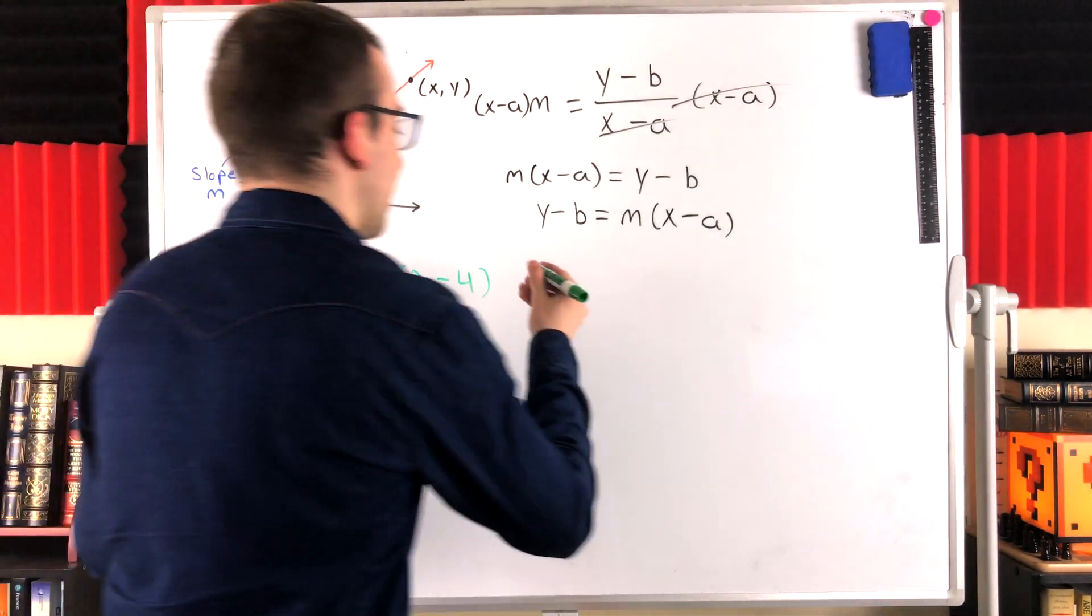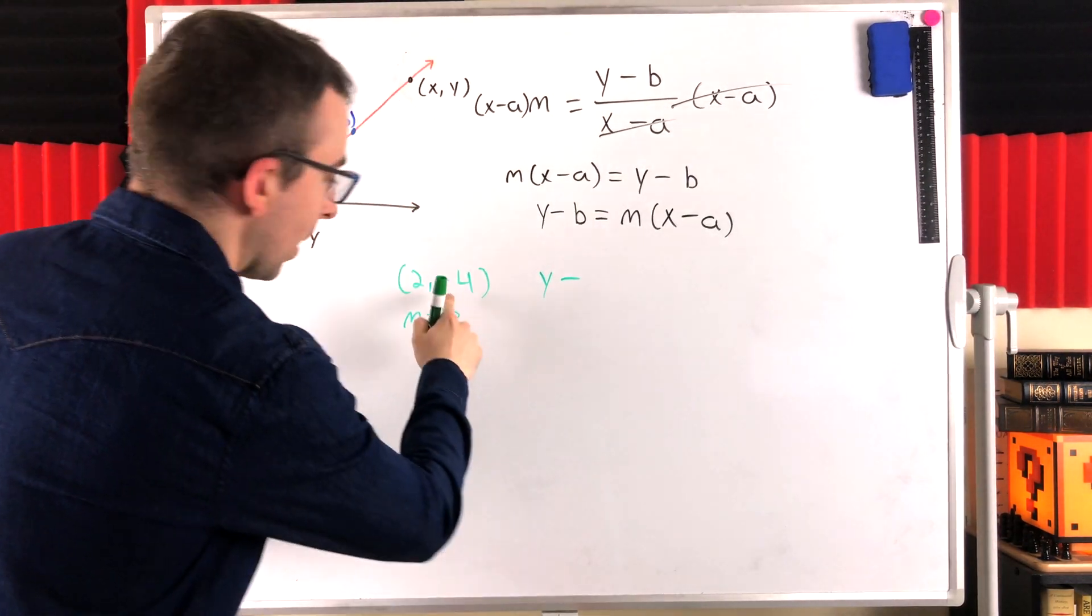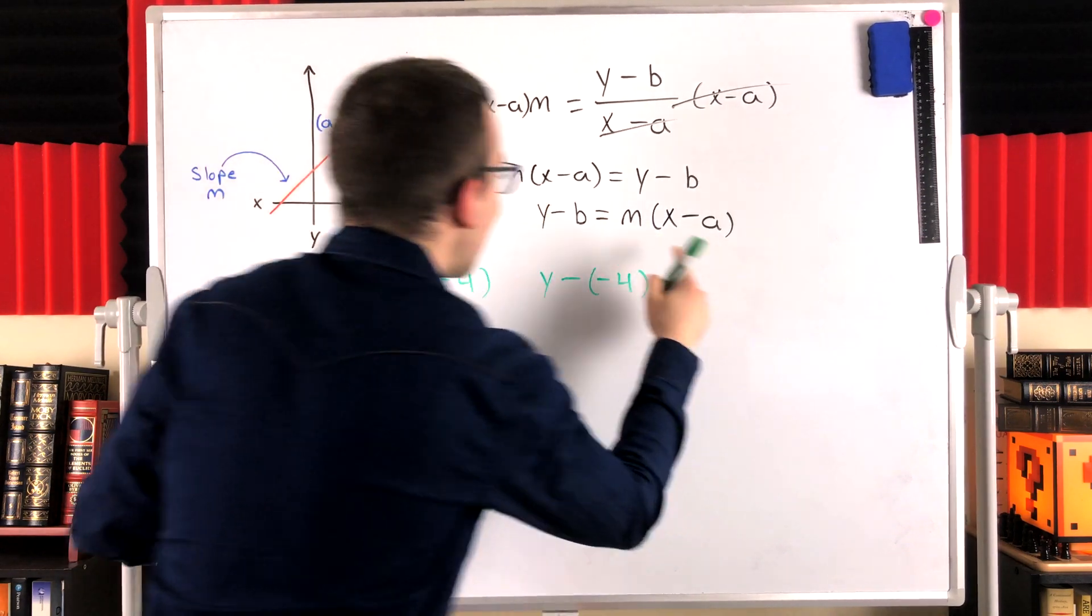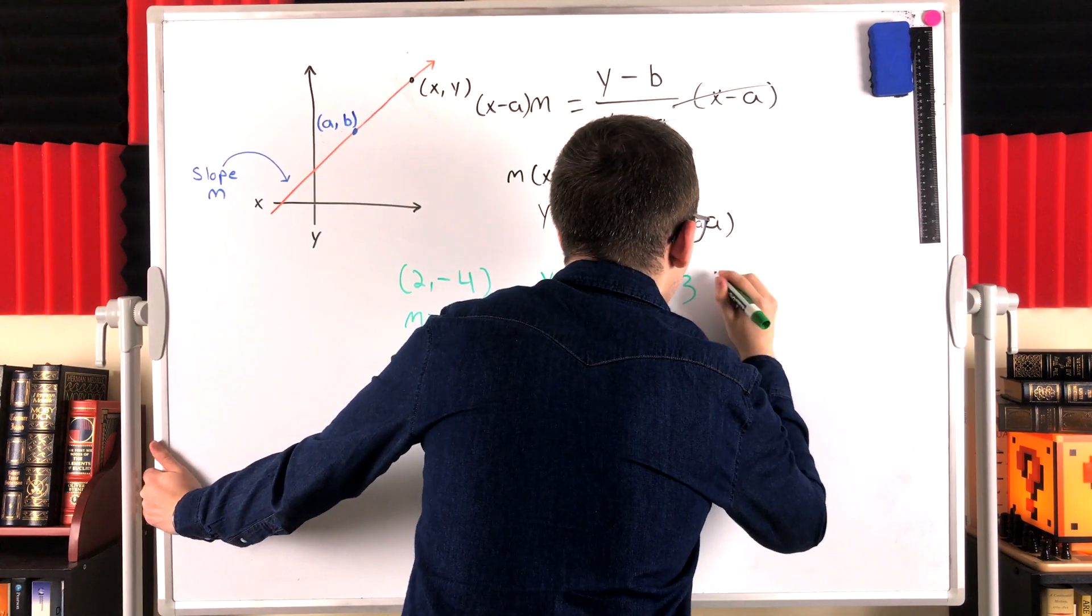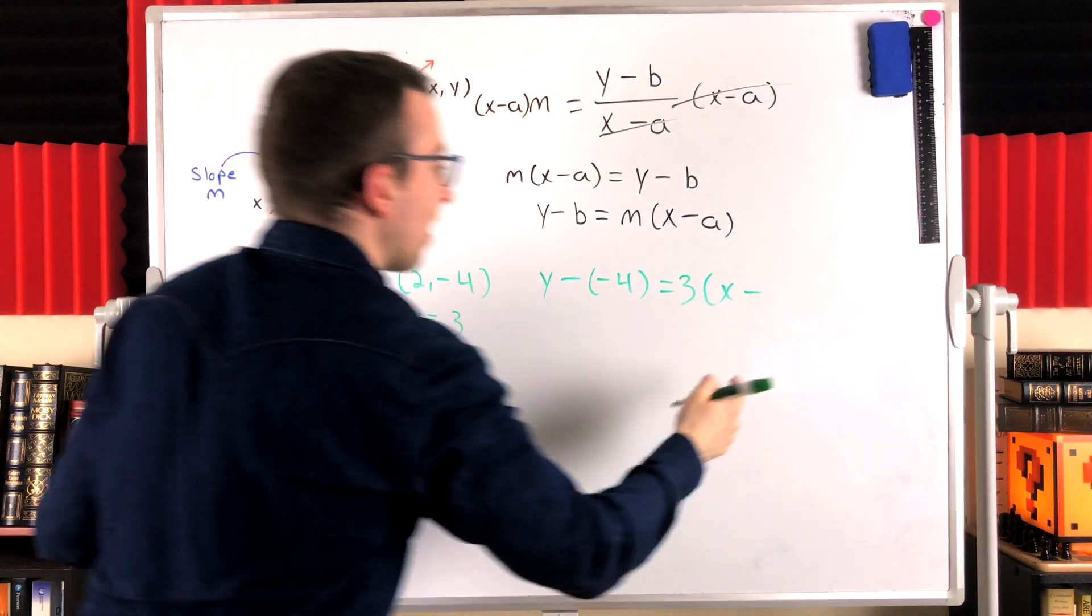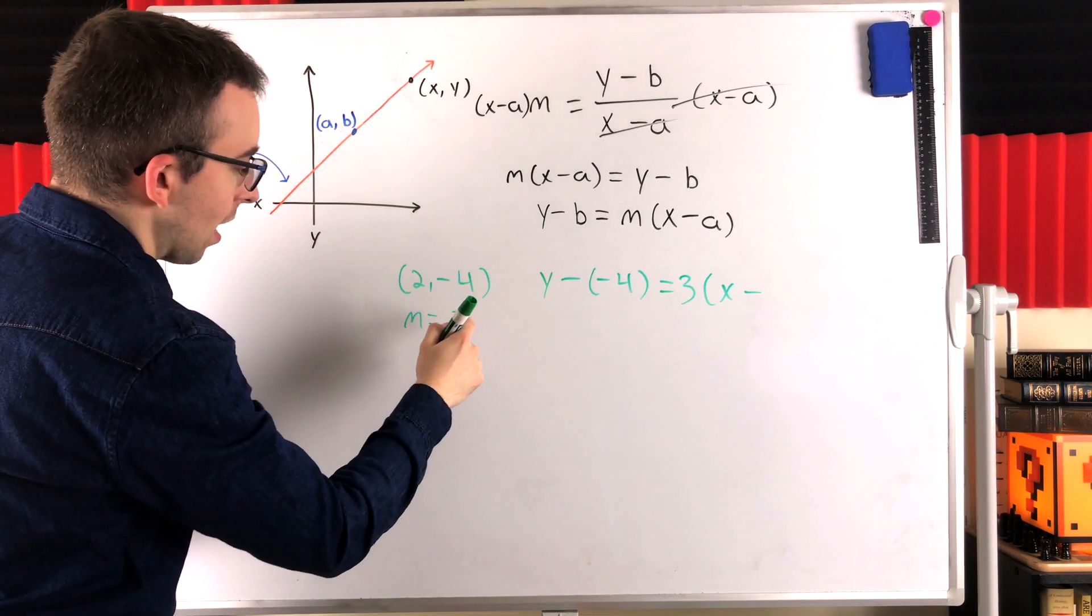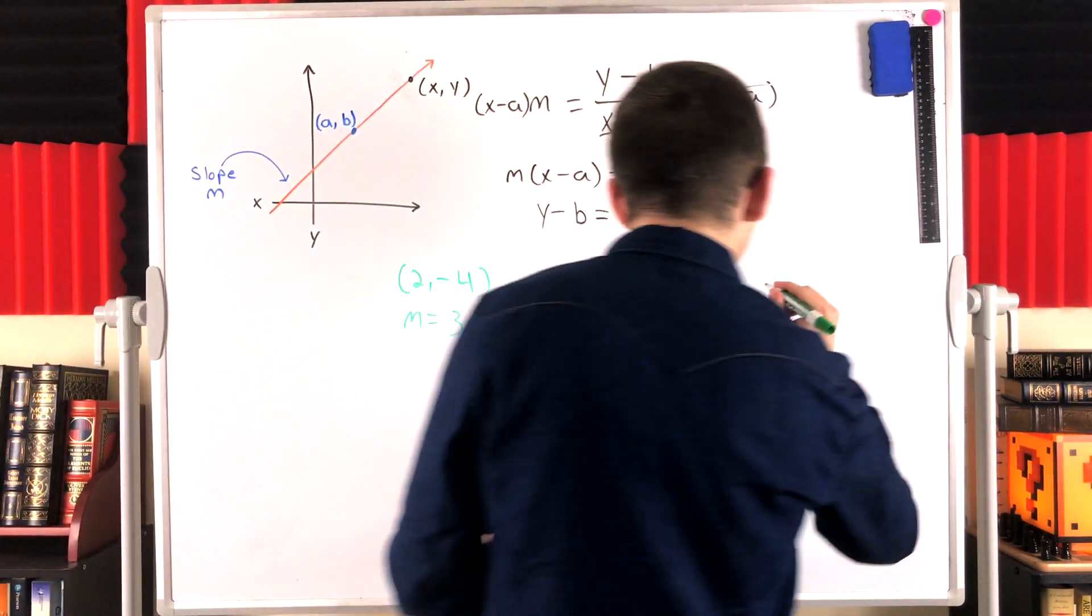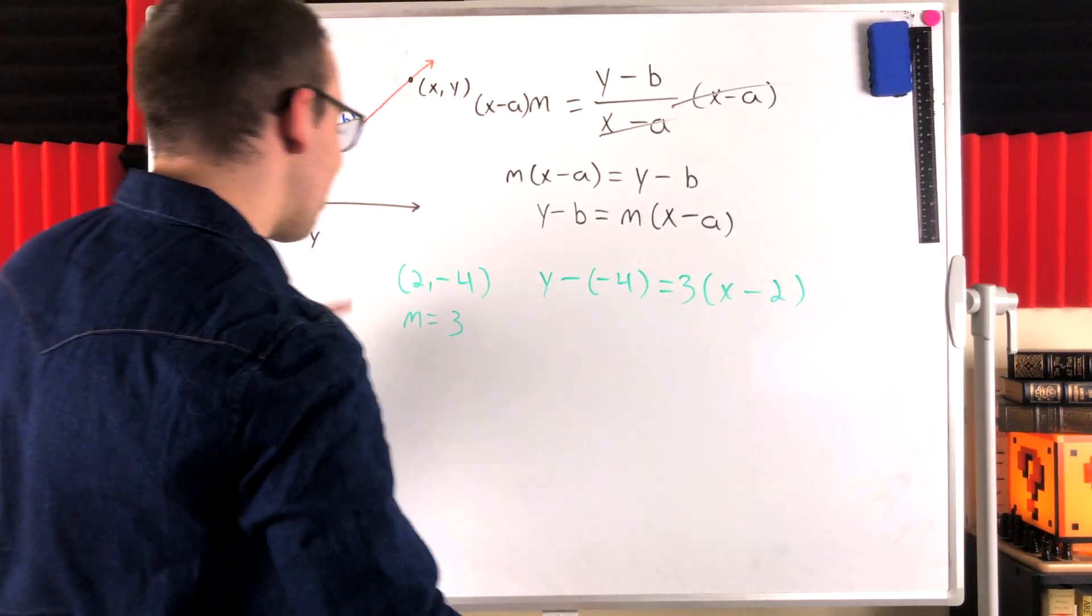So, the equation of the line is going to be Y minus the Y coordinate of the given point, which is -4. So, Y minus -4 is equal to the given slope M, which is 3, multiplied by X minus the X coordinate of the given point, which is 2. It's X minus 2. Beautiful. And there it is. That's our point-slope form equation of the line.